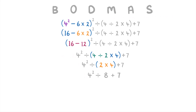Now that we've got rid of all the brackets, the next thing is the order on the 4: 4 squared equals 16. Next we do the division: 16 divided by 8 equals 2. Finally the addition: 2 plus 7 gives us 9 as our final answer.